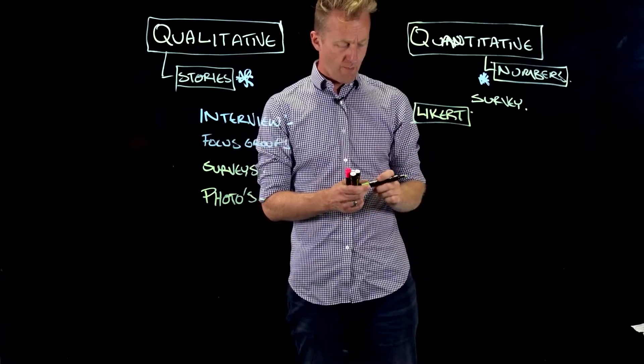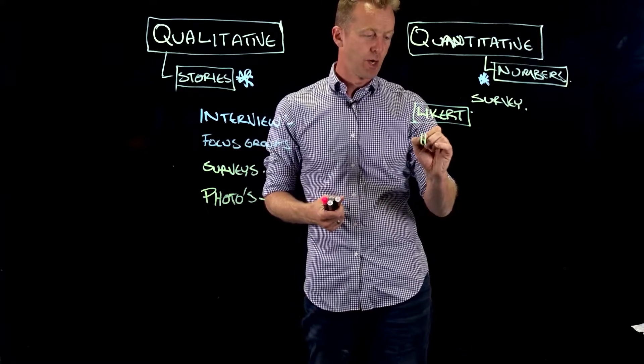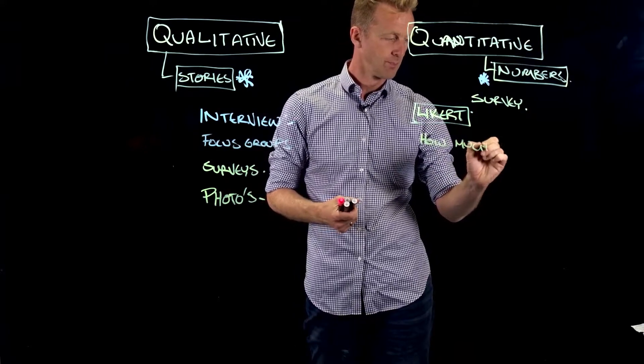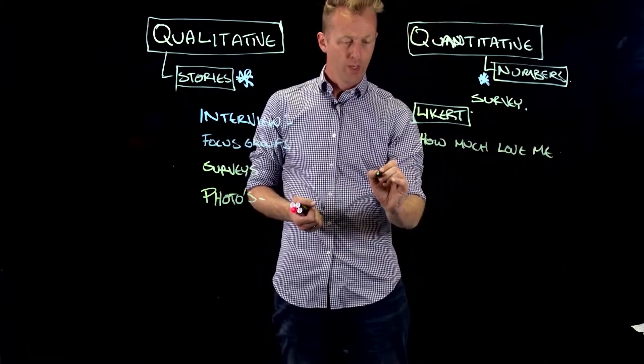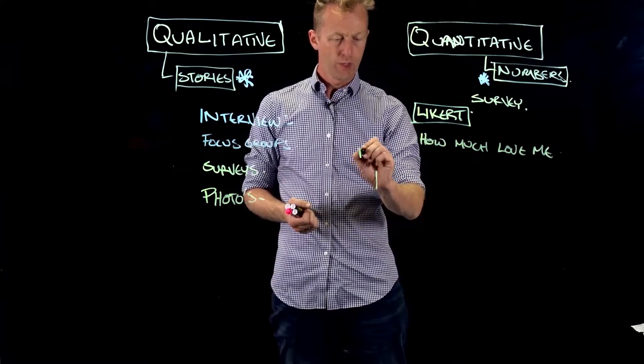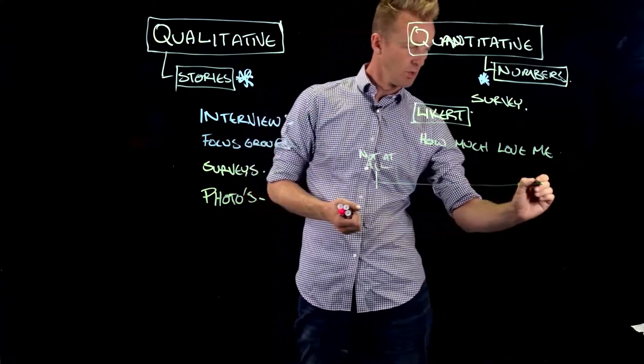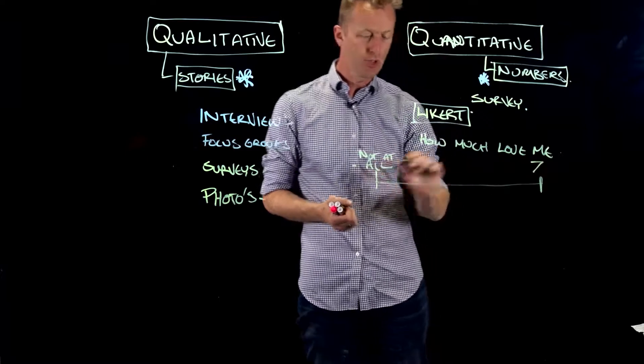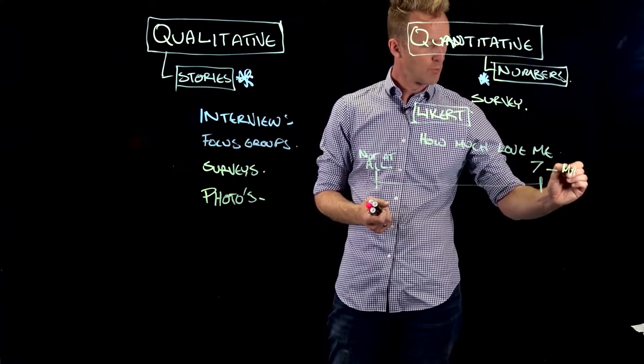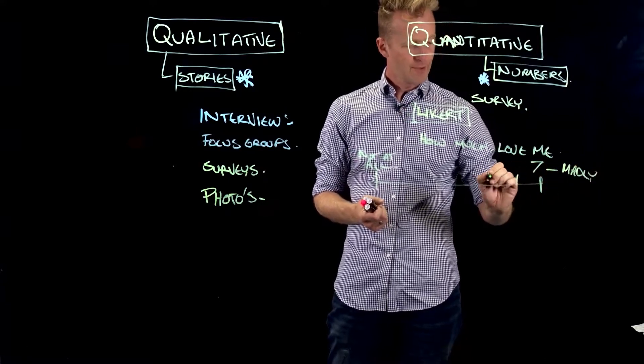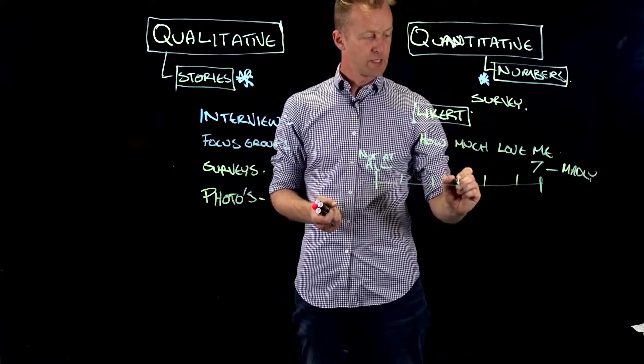And it might be, oh, let's just go, how much do you love me? Right? And then we're going to rate that all the way from one equals not at all. Devastating. All the way through to seven. We usually run Likert scales through to seven, which is madly. Madly in love. Right? And then you have points in between. I don't know whether I've made seven points. Yep. Made seven points there. And then this is kind of neither.